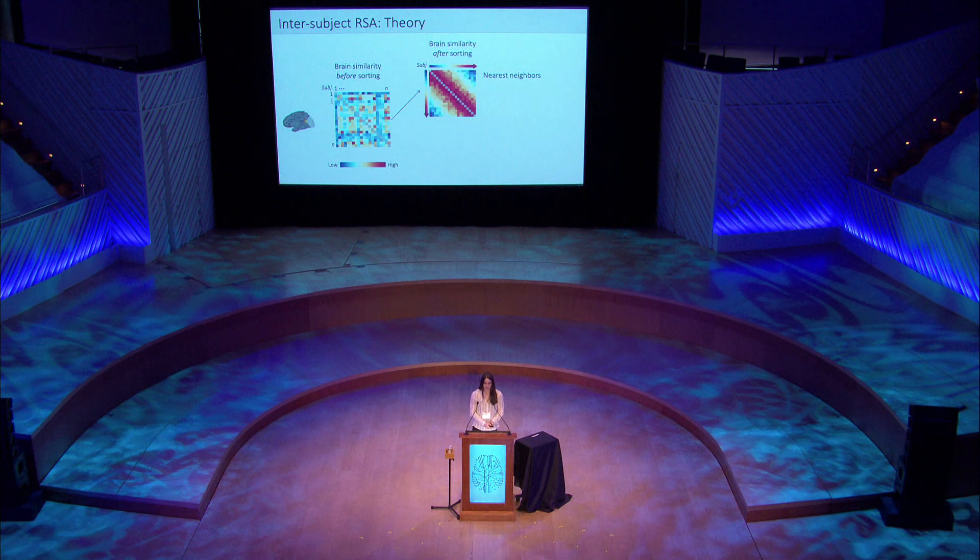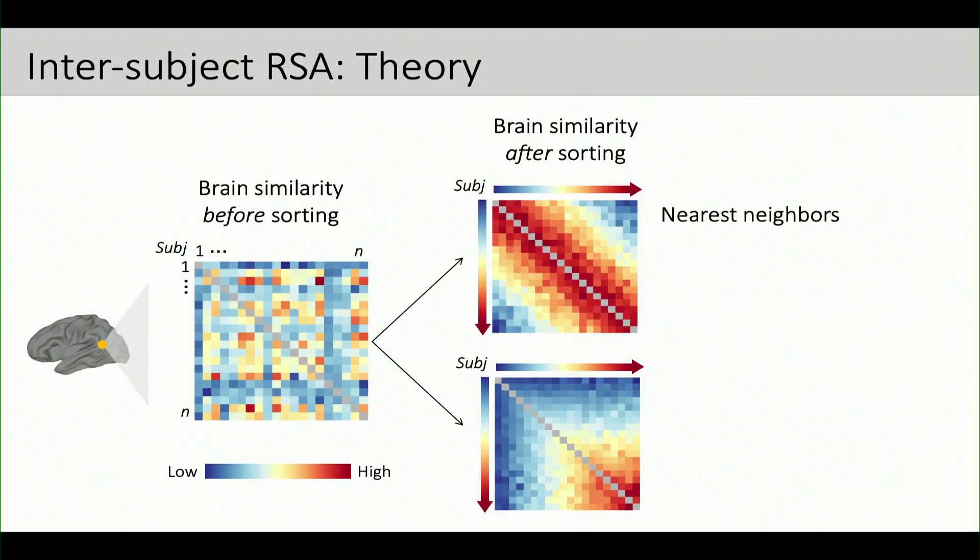However, another potential structure that we might see in the data would be something like this. So here, what we might see is that subjects that score high in this particular example on this trait look more similar to other high scorers, but as we move down to the lower end of the spectrum, we see sort of this spreading in variance such that low scorers don't necessarily look similar to one another or to anyone else. And this would not be well captured by a Euclidean distance framework, and I like to call this type of potential structure the Anna Karenina structure because basically what it's telling us is that all high scorers are alike where all low scorers are low scoring in their own way. And of course, we could maybe flip high and low depending on the behavior that we're interested in.